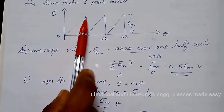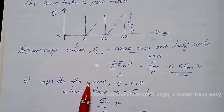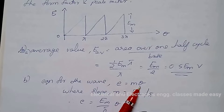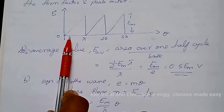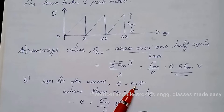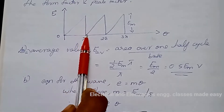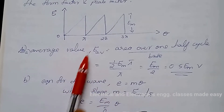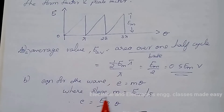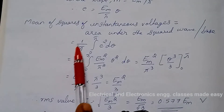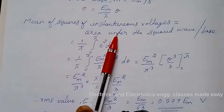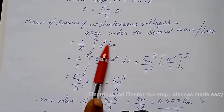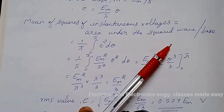To find the RMS value, we find the equation for this line. The wave is e equals m into theta, where m is the slope. Slope equals y divided by x, that is em divided by pi. Therefore e equals em by pi into theta. The mean of squares of the instantaneous voltage equals the area under the squared wave.